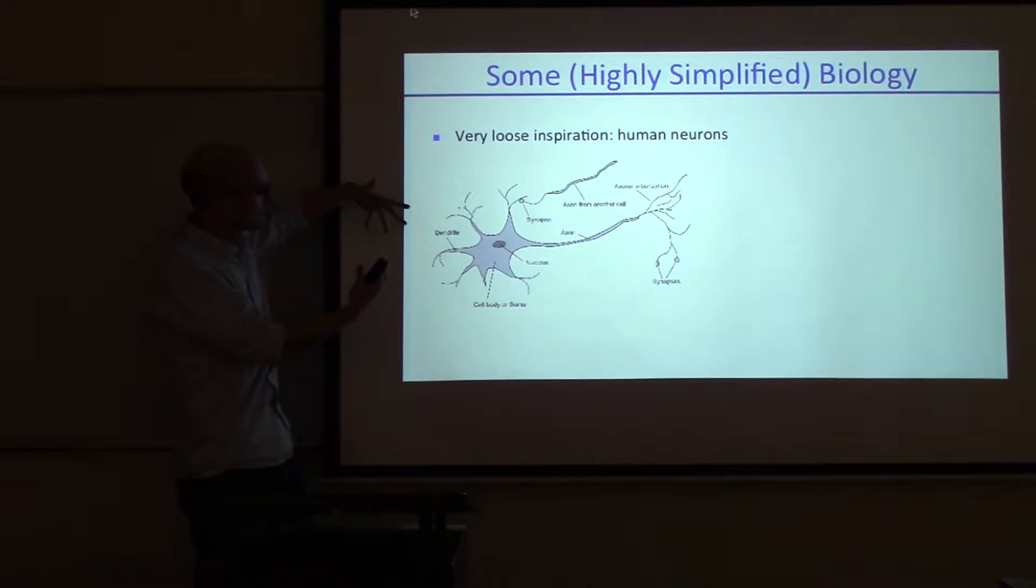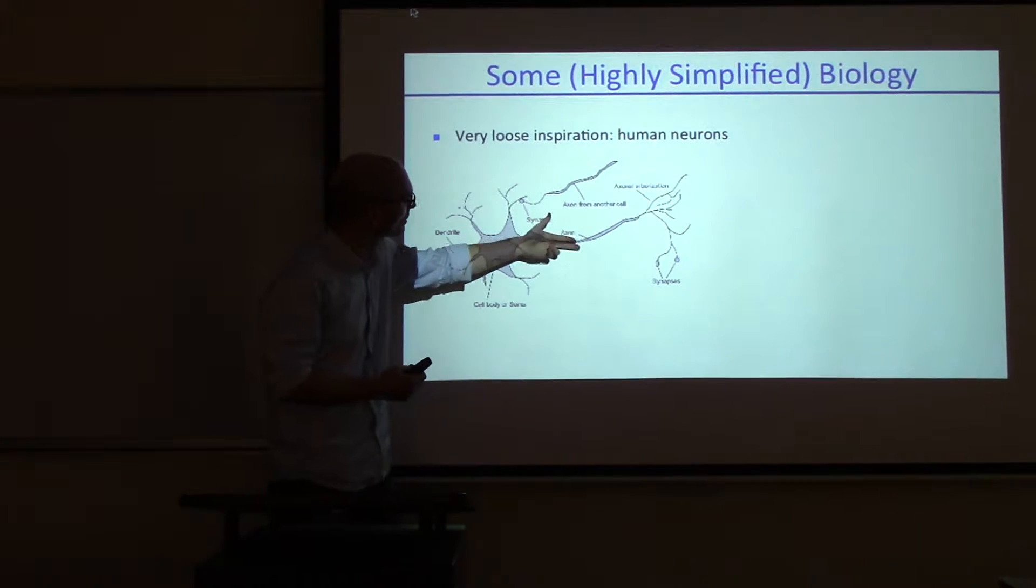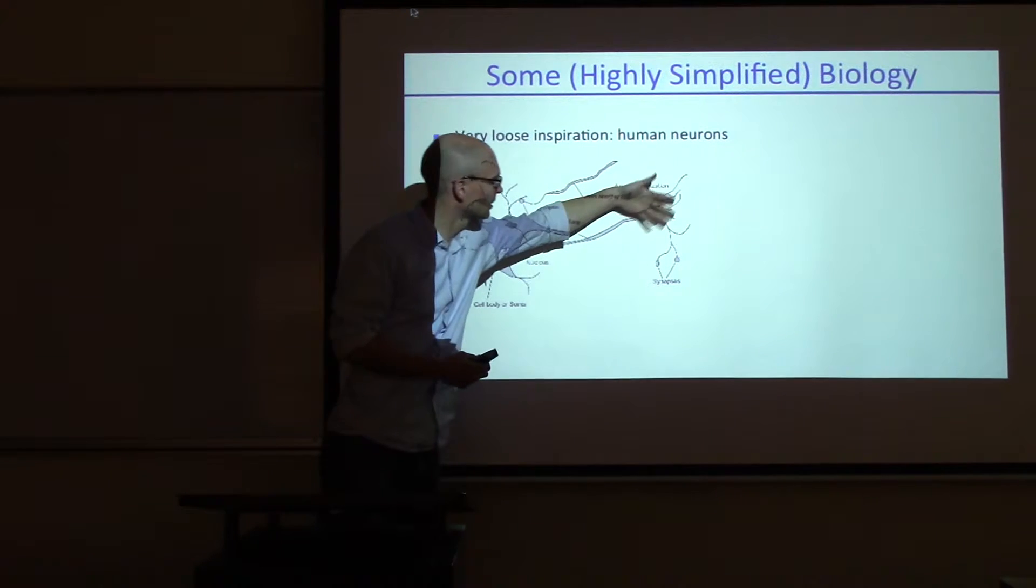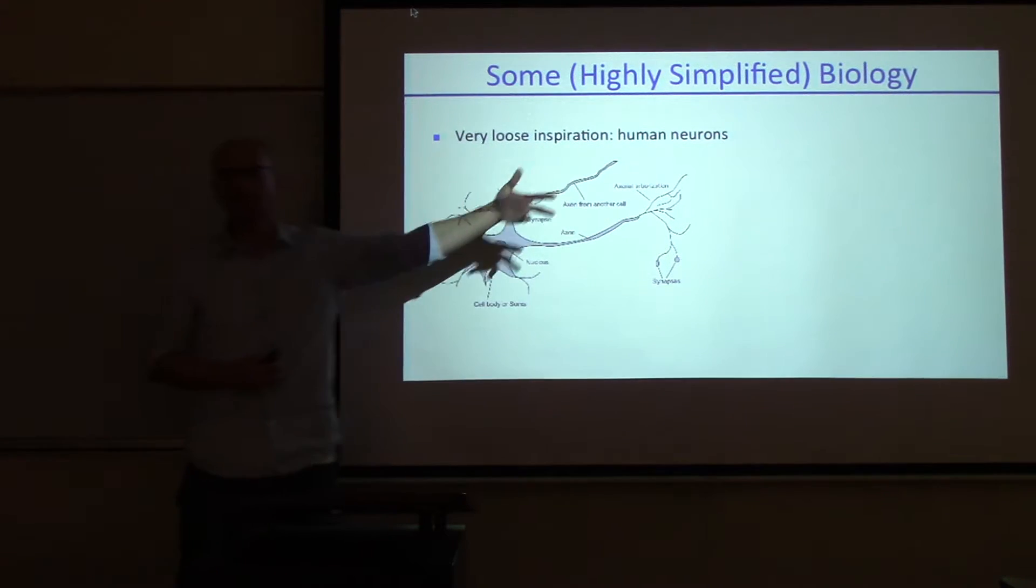The dendrites are the inputs of the neuron, coming from other neurons or from your eyes or your ears. And this is the output, the axon, which then splits and goes to other neurons who take that as their input.